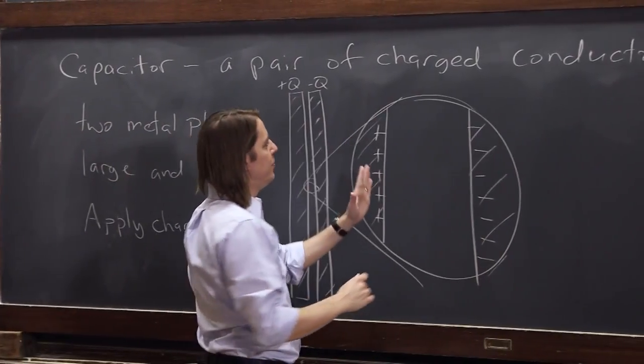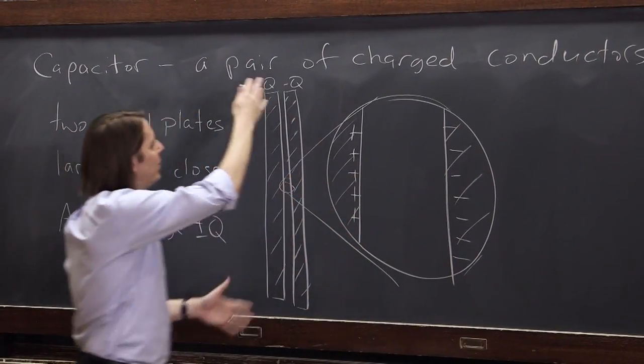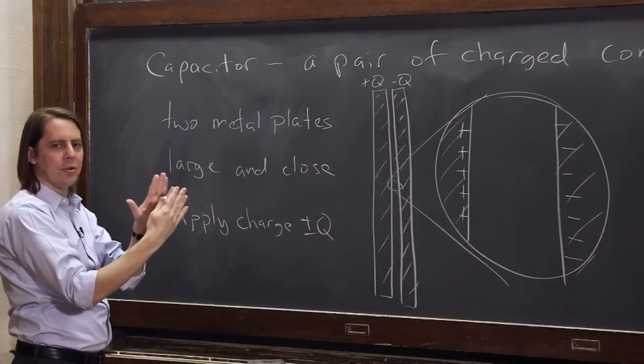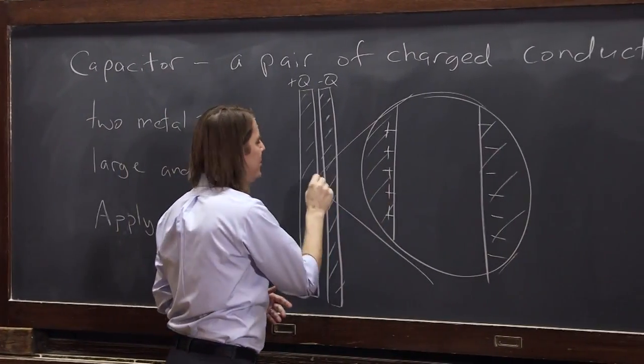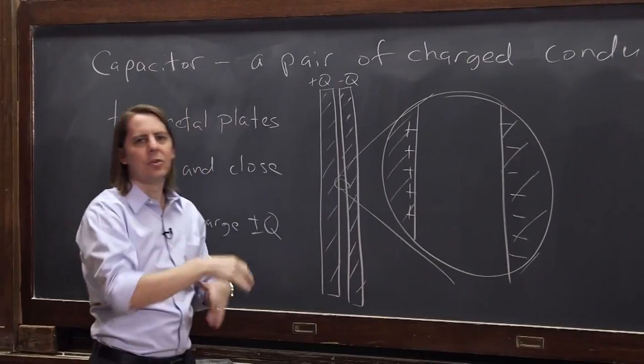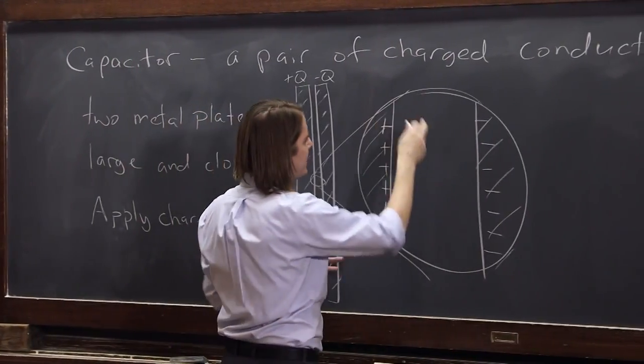So we know that this plane is going to make a field that way. And that's why we like two large metal plates that are really close, is in this gap, we want to be so close to the surface that it basically looks like an infinite plane.